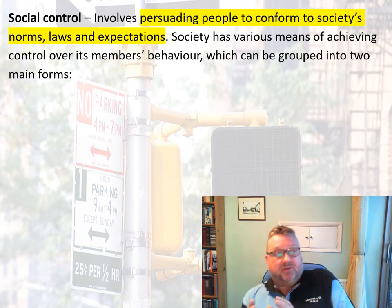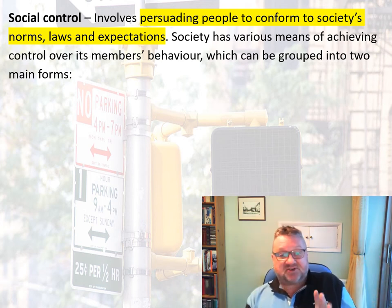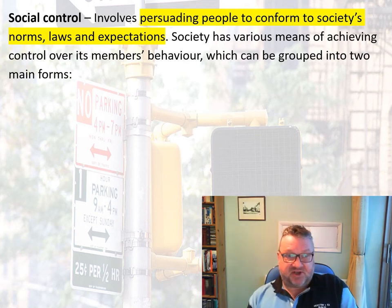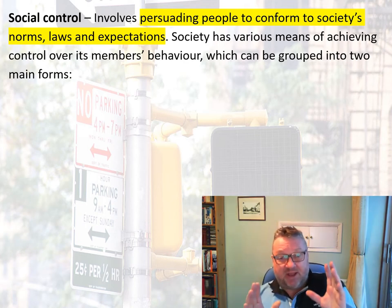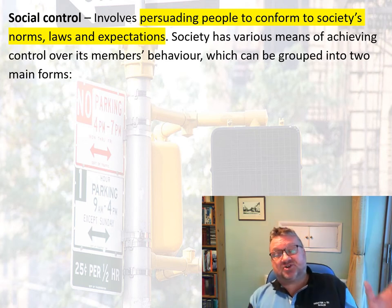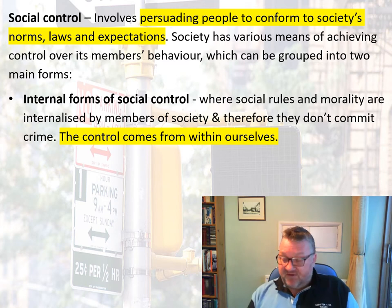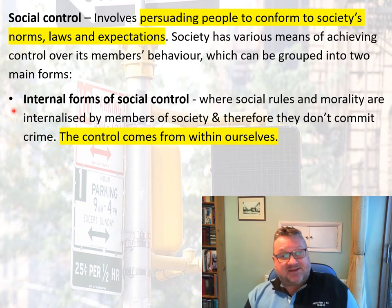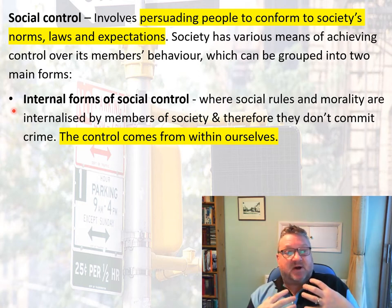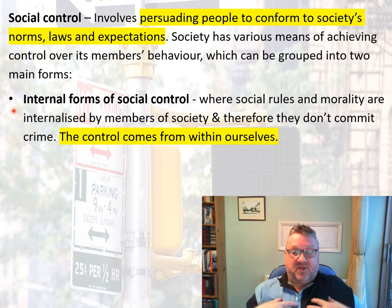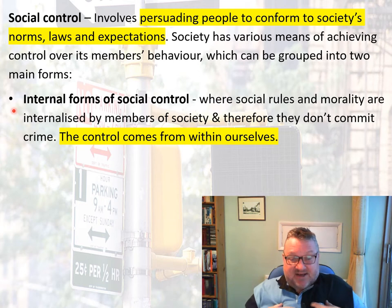Social control is how society persuades us to conform to its norms, its laws, and its expectations — how it makes us behave. Society has lots of different ways it achieves control over our behaviour, but in general it can be grouped into two main forms. One is internal forms of social control, where the rules and morality are internalised by members of society so they don't commit crime. The control comes from within us — we've internalised it, it's part of us.